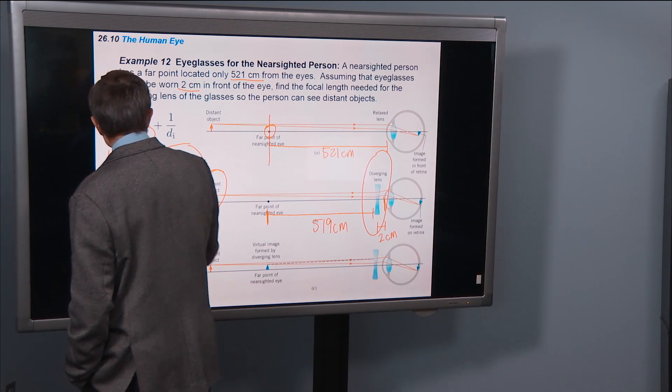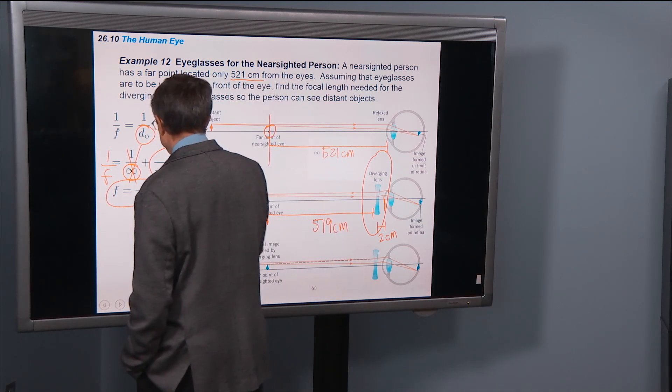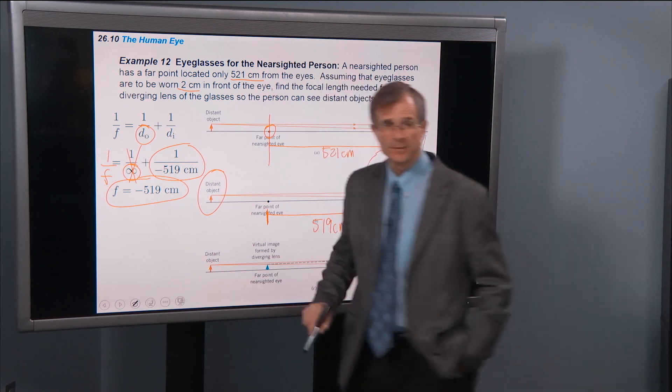Which tells me that 1 over f equals minus 1 over minus 519, and the focal length of that lens must be 519 centimeters.